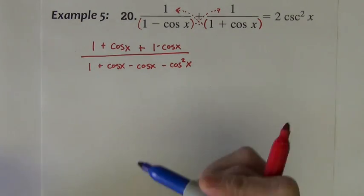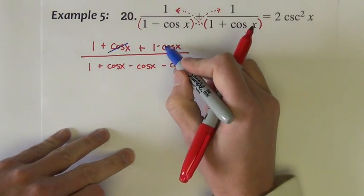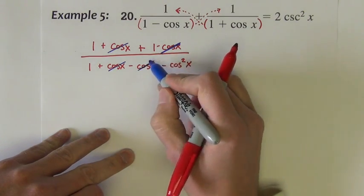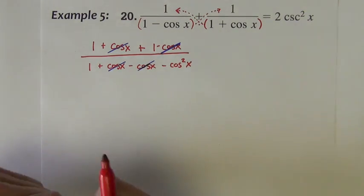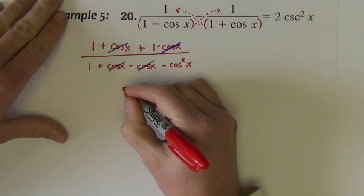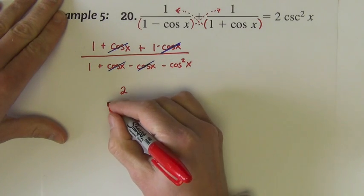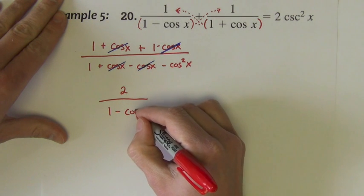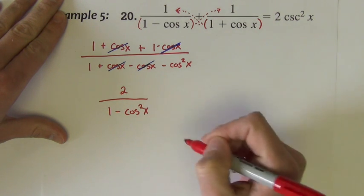1 plus cosine x minus cosine x minus cosine squared x. Now we can do some like terms. In the numerator I've got some like terms that add to zero, same thing in the denominator. So the result in the numerator is 2, the denominator is 1 minus cosine squared.